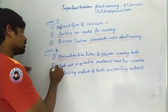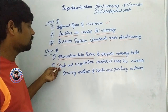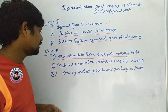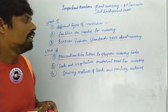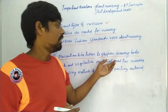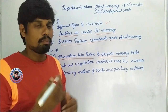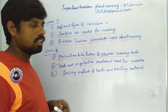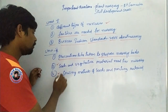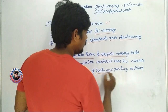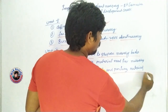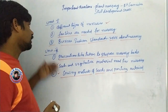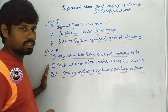This is the first important question. Coming to the second important question: seeds and vegetative materials needed for the nursery — what are the seeds and vegetative materials essential or needed for the nursery preparation and nursery management? Coming to the third important question: sowing methods of seeds and planting material. This is the third important question.